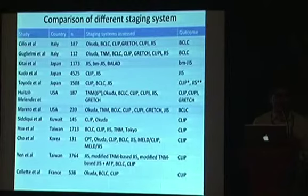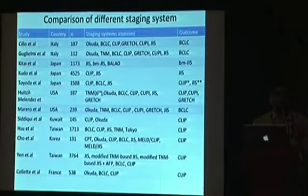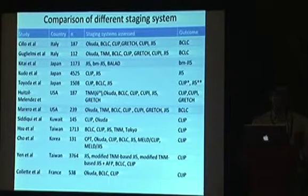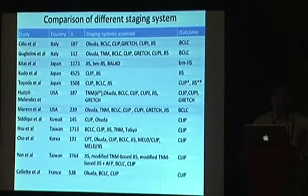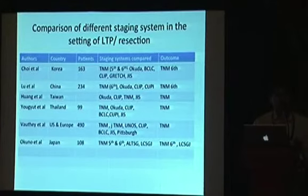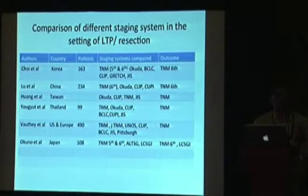Most comparative studies include a combination of early and late patients, both non-surgical and surgical series, comparing different staging systems. In most studies, it is the BCLC and CLIP which have favorable outcomes. Only in two Japanese studies was the Japanese integrated staging program found to be better. However, for surgical series — especially resections and liver transplant — it is the TNM staging which scores over all others. The first four studies in the comparison list are resection series and the last two are transplant series.